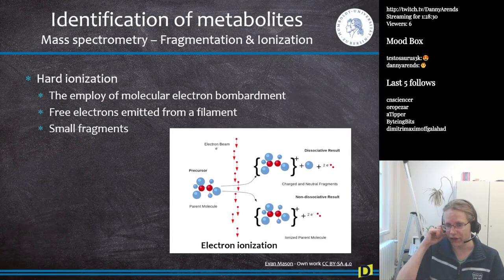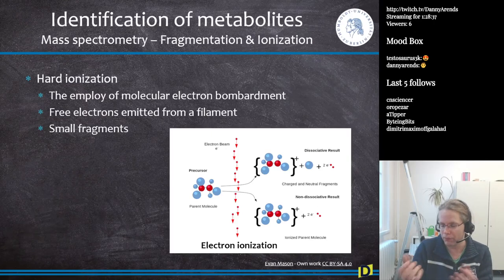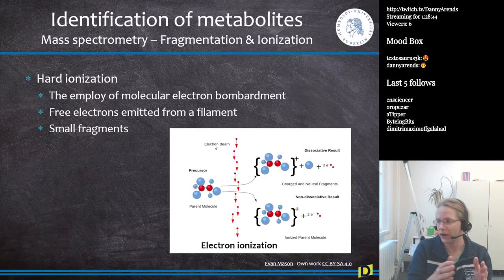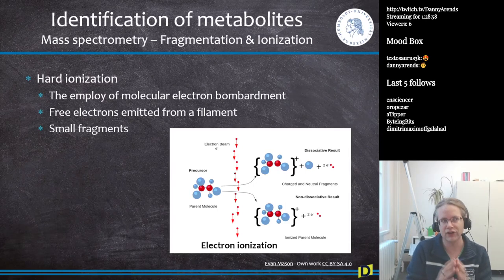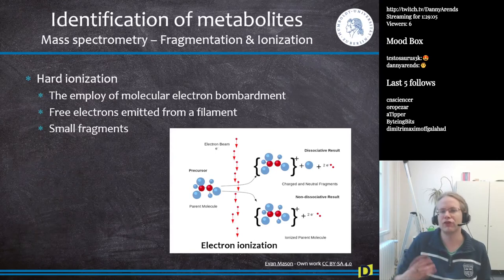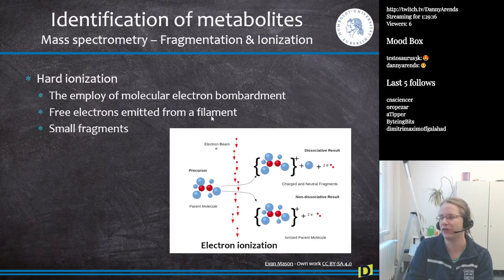When discussing fragmentation and ionization, different techniques are used. You start with a mixture, separate it into individual compounds using chromatography or electrophoresis, and then you need to charge those compounds so they can fly through the mass spectrometer — because in a mass spectrometer you analyze the mass-over-charge ratio. So the compounds must be ionized.